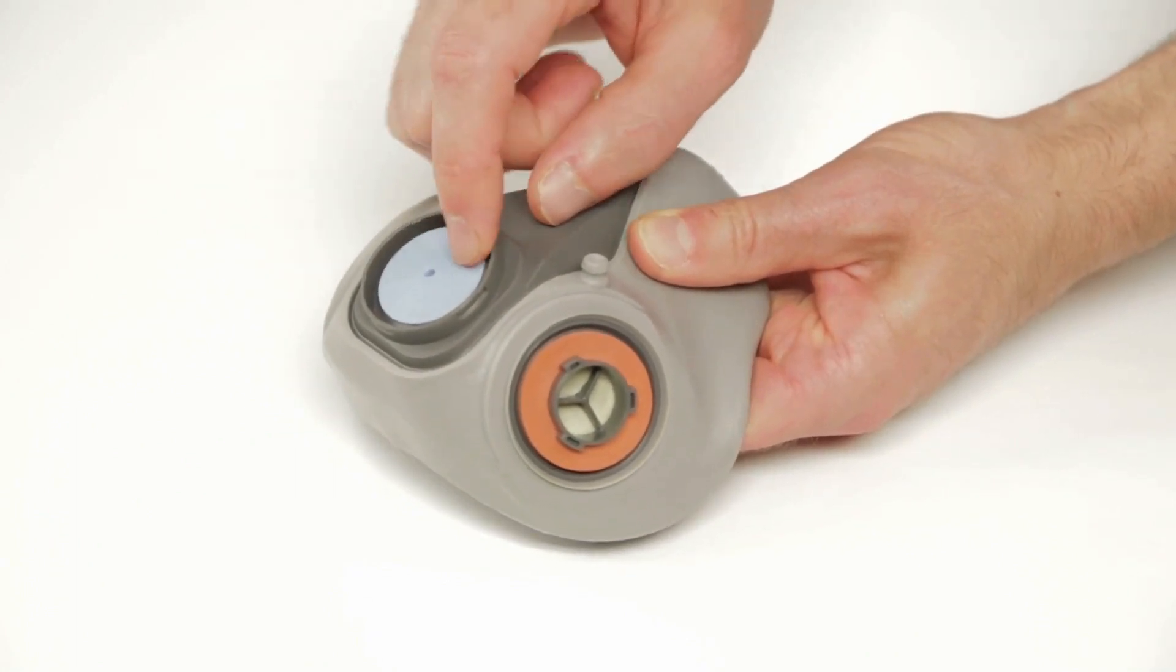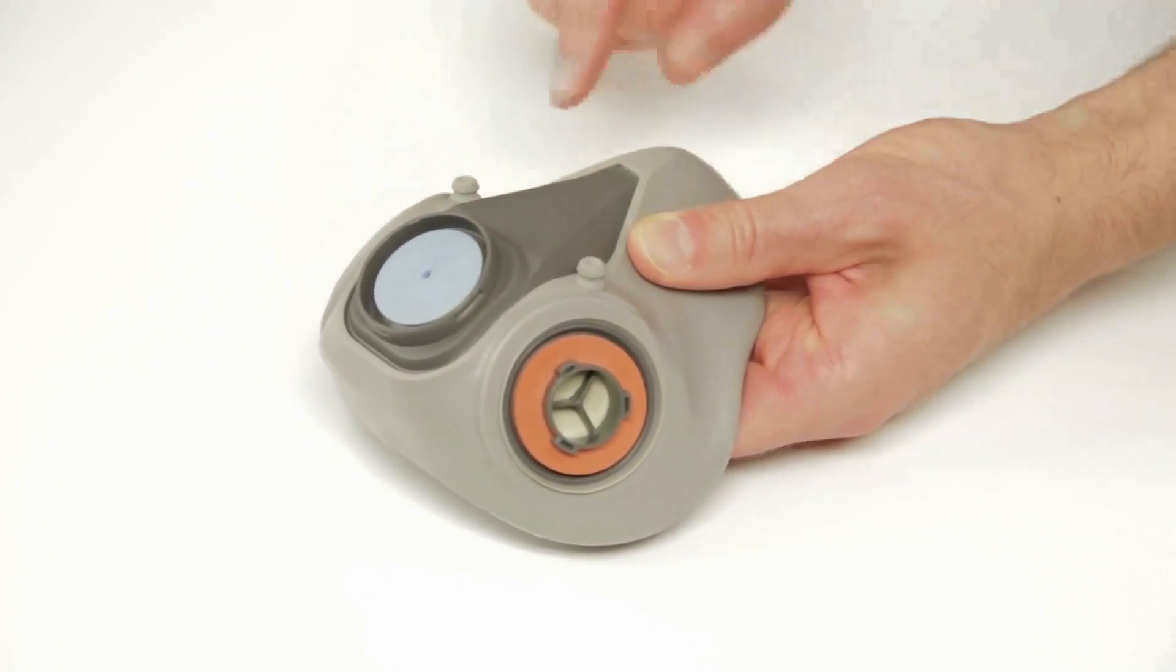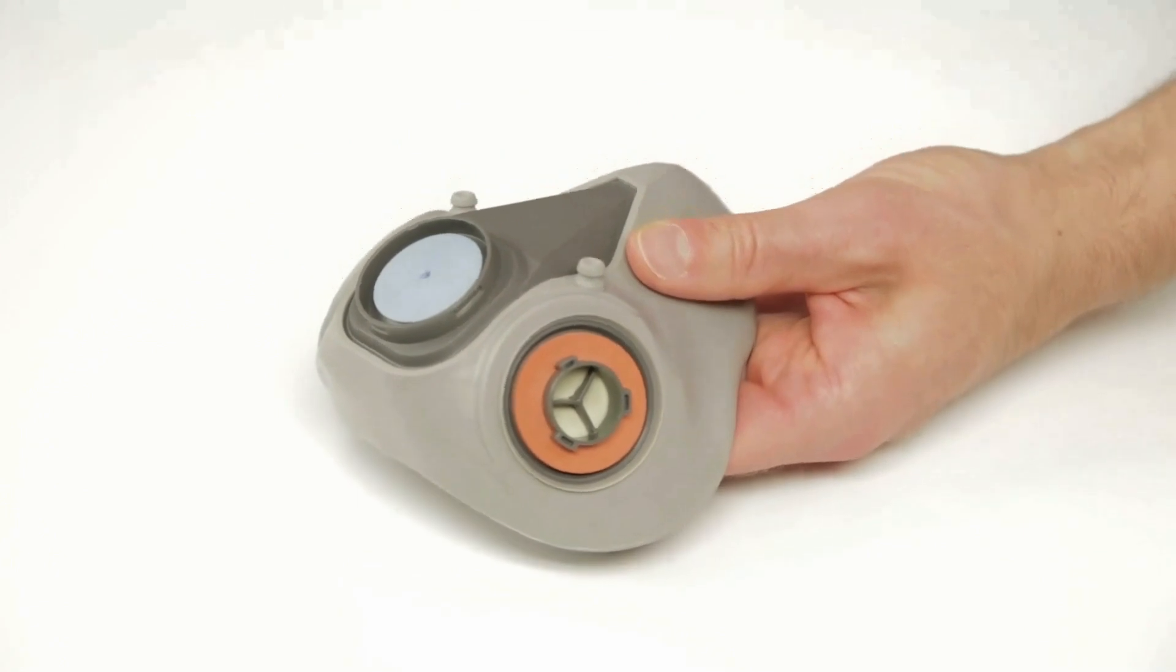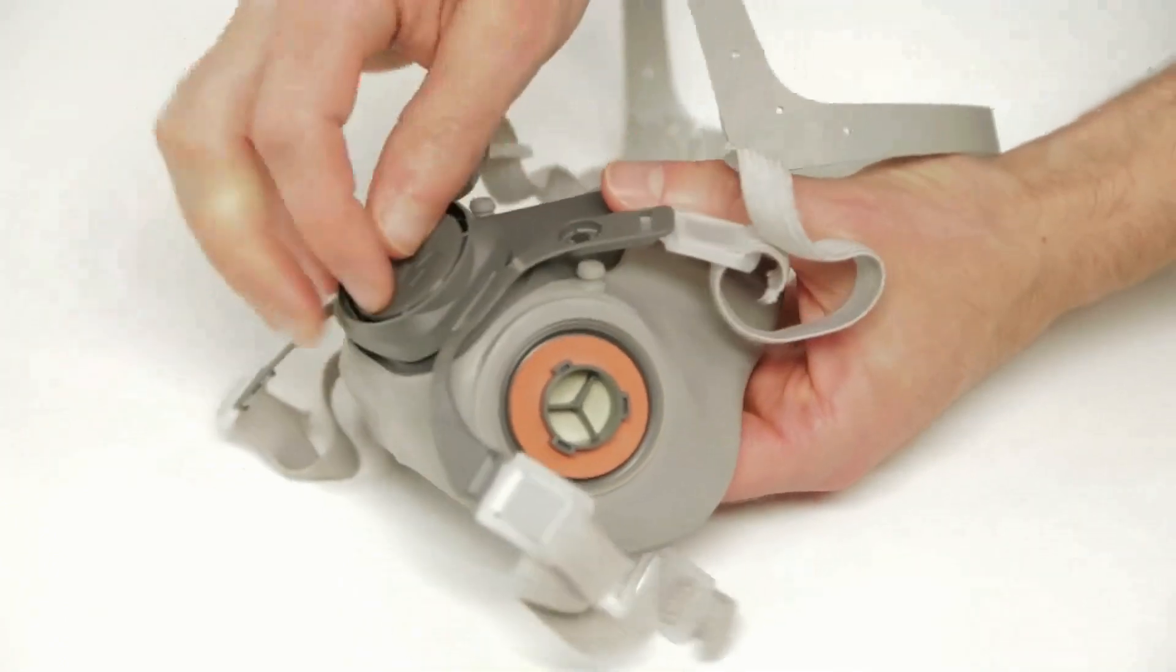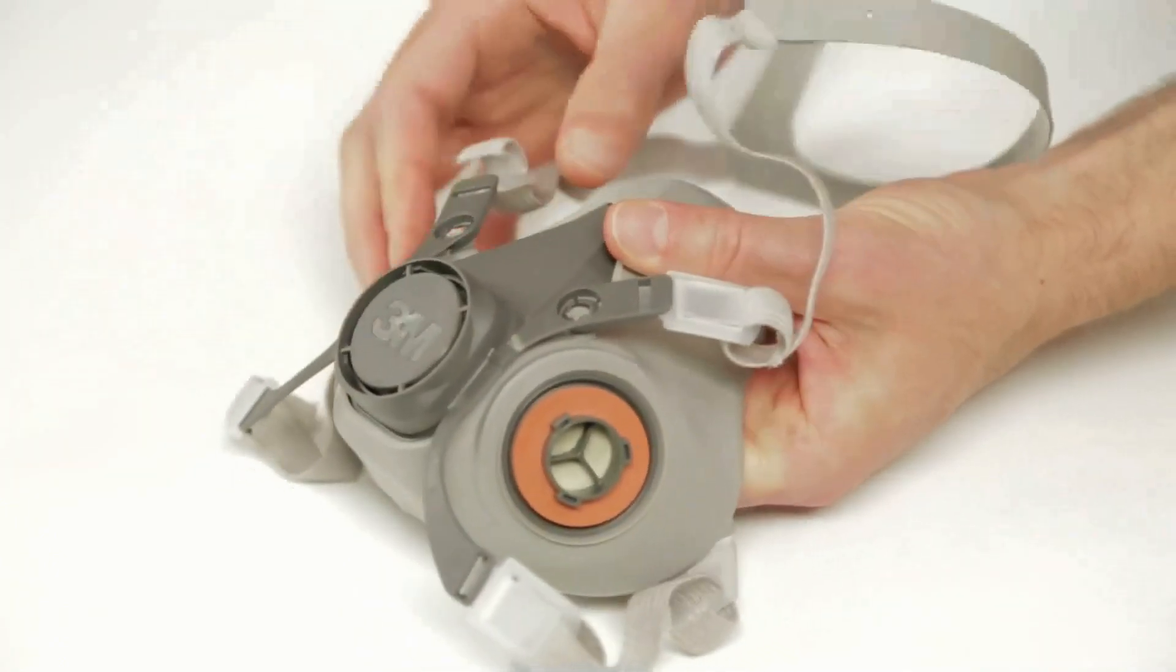If the valve does not spin freely, push on the valve again until the stem is fully seated in the center hole. Replace the respirator strap assembly as you did before.